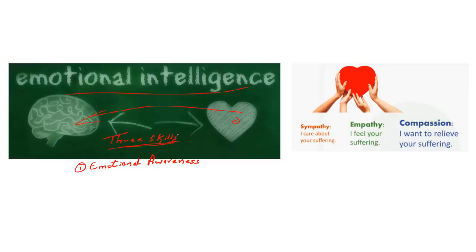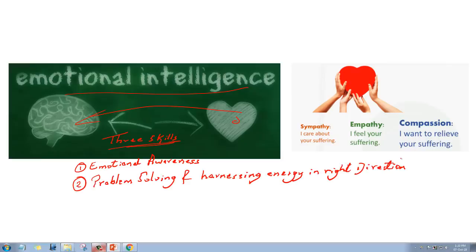This is followed by problem solving and using one's energy to direct it toward a particular objective in the right direction. To explain the second skill of emotional intelligence, let's say there are four people living happily in a forest area — tribal families, content with their life, in a state of bliss.